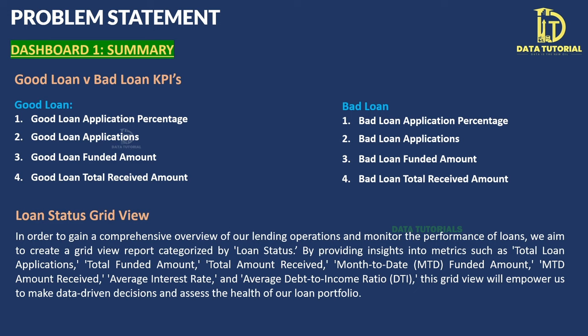The MTD total loan applications will be calculated using the issue date. Issue date represents when the disbursement for a particular loan was made — the date the bank approved and gave out the loan to the customer. We'll identify the current/latest month from this field and count applications accordingly.